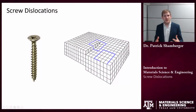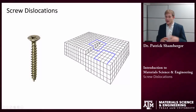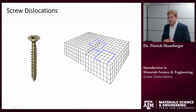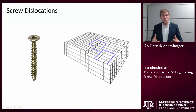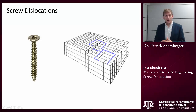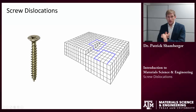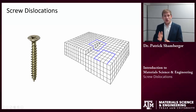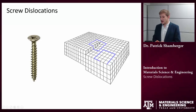Howdy! The purpose of this video is to describe one principle kind of a linear defect, and that is a screw dislocation. There are two kinds of linear defects that we've talked about so far: edge dislocations and screw dislocations. Edge dislocations occur when you have an extra half a plane of atoms in the lattice.